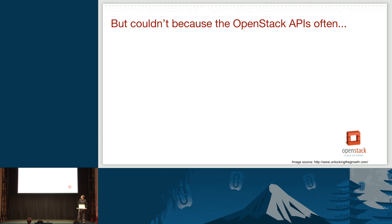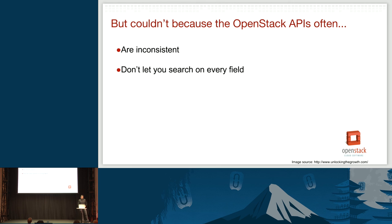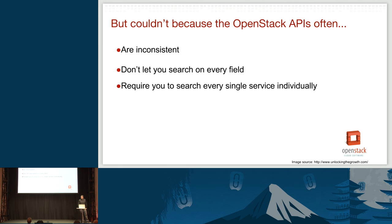With OpenStack you actually couldn't do this because a lot of the APIs are really inconsistent. They're inconsistent amongst themselves about what you can search on in different fields and whether you can do wild carding. Across different services they're different too — maybe you can use a wildcard in a certain field in Nova but not in Glance. And they usually don't even let you search on every field, so full text search on the description field for images won't work.